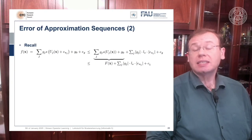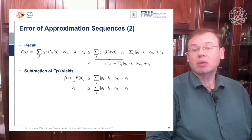And this is plus the sum over the components of gj times the Lipschitz times the absolute value of the error plus the error that we introduced by g. Now we can essentially subtract capital f of x.